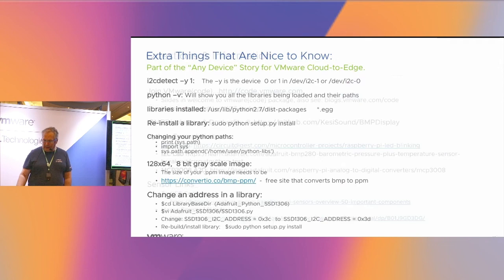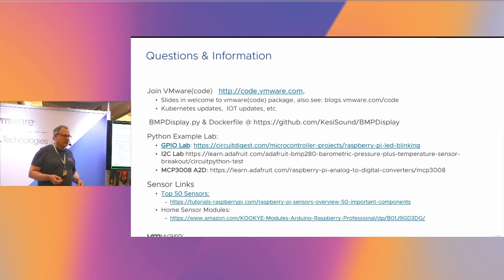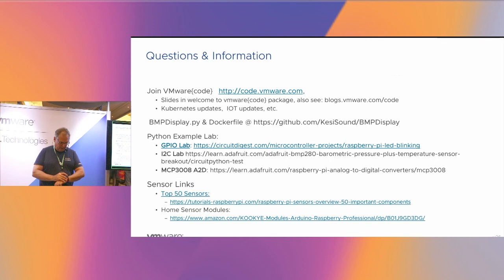You can go to code.vmware.com and search for this slide deck — we have some labs out there. We have several Docker images available: BMP280, infrared, digital touch, and DHT11 sensor. Everybody that attends gets a sensor ticket so you can get a free sensor. If you want to go buy a kit, they're about $30 on Amazon. I'm running sensor programming on Raspberry Pi later today if you want to hang out. I got done in 23 minutes, so we have seven minutes for questions.